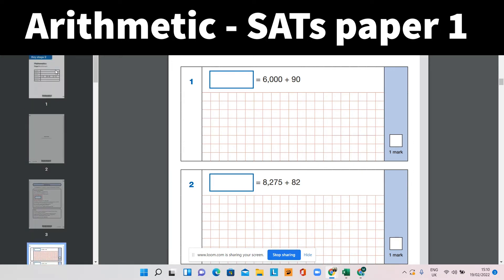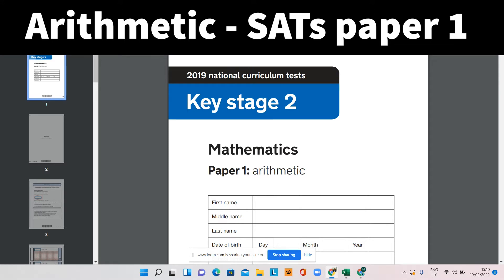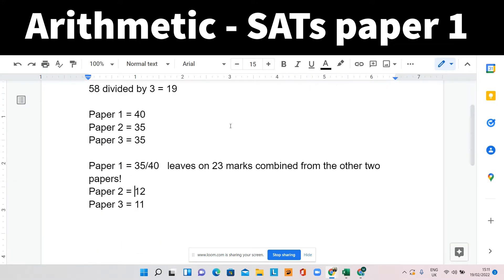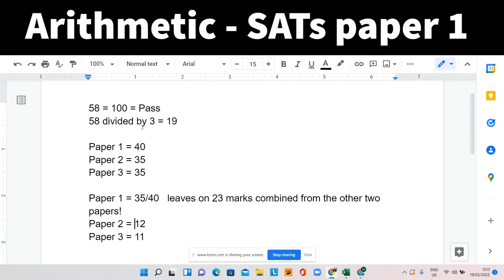So we try and make sure the children score highly on this. And let me explain a little bit why that is. So here we have, this is the pass mark from the 2019 paper. Now you can see there's a couple of numbers here, the first one being 58. So that's their raw score.